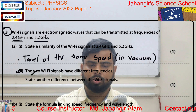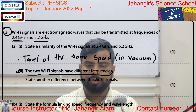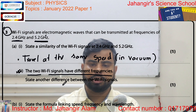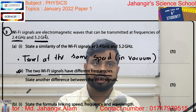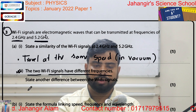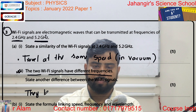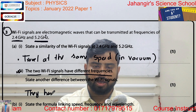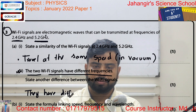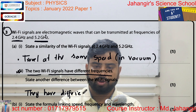A2: the two Wi-Fi signals have different frequencies. State another difference between the Wi-Fi signals. They have different wavelengths.